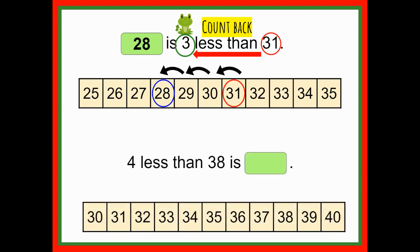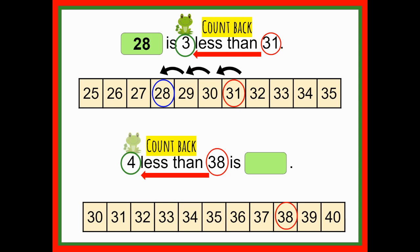Now for the last one, I've moved things around a little to show you that even if the words are in a different order, we still solve it the same way. This time the starting number is in the middle of the sentence, not at the end. We are going to start on 38. We want to find four less than 38 — 'less than' tells me to count back. Our hopping number is four. Starting at 38, we count back: one, two, three, four — landing on 34. So four less than 38 is 34.